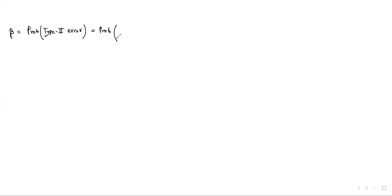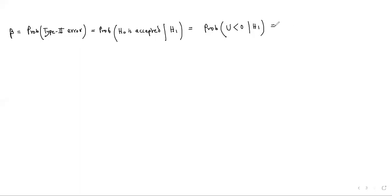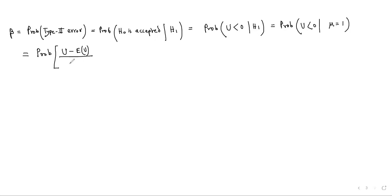This value 0.0808 is your alpha. Now for beta: beta = P(H₀ accepted | H₁ is true) = P(U < 0 | mu = 1). The values are not in the critical region when U < 0.